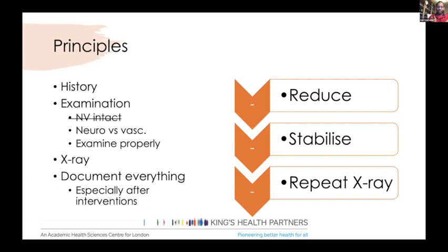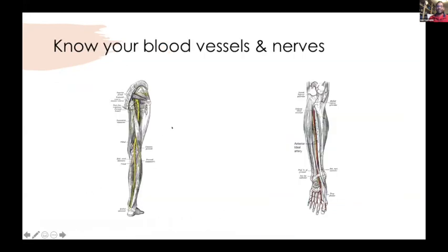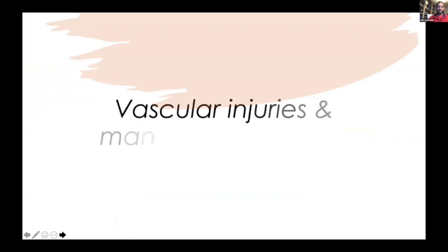Reassess the neurovascular examination after you've intervened in any way, document your findings, and get a repeat X-ray. For example, if you're putting a U-slab on someone's humerus and their radial nerve function becomes affected after manipulation, that is an acceptable complication provided you respect the patient. What is not acceptable is failing to re-examine. Know your blood vessels and nerves — you are representing the orthopedic department at a trauma call, and that expertise really helps the ED team.